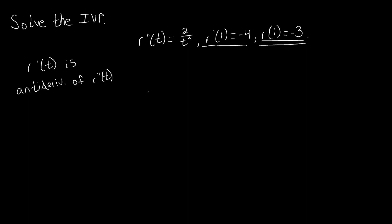What that means is that if we want to find r prime of t, we're going to anti-differentiate r double prime of t. We know that to anti-differentiate something we're going to take the integral of it. So to figure out what r prime of t is, we're going to integrate both sides to give us that r prime of t is the integral of r double prime of t — or in this case 2 over t squared — with respect to t.